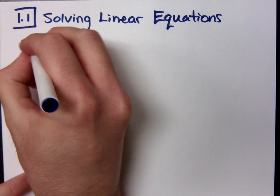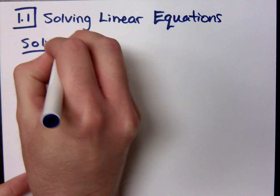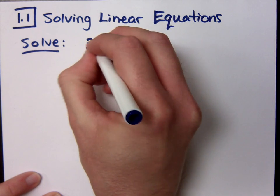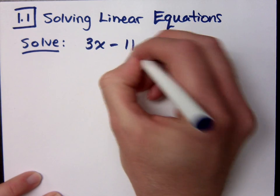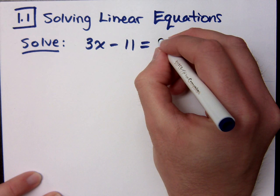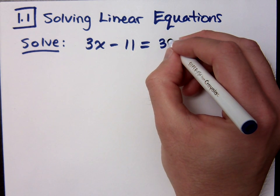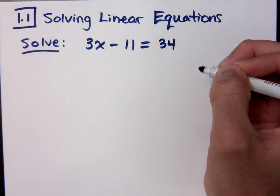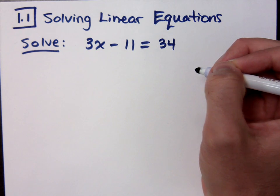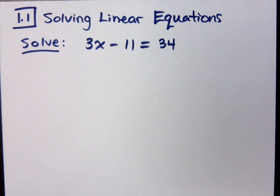If I take 3x minus 11 is equal to 34. Remember when you're trying to solve, what are you trying to do? Get the x by itself. Get the x by itself, and the fancy word for that is isolate.